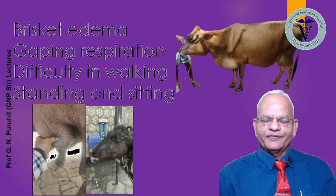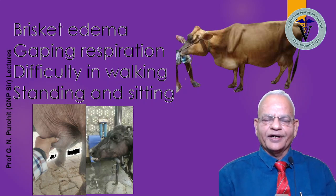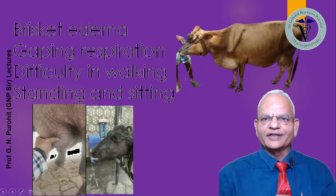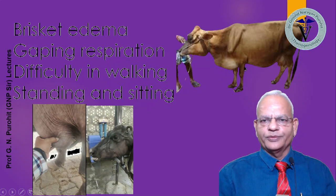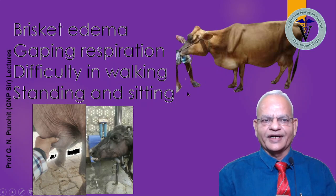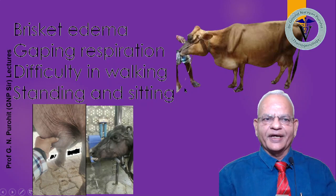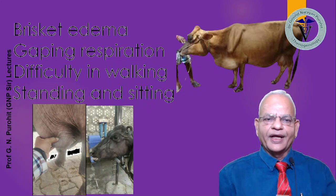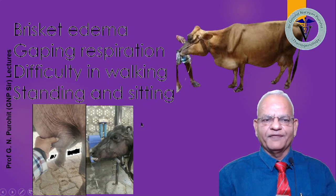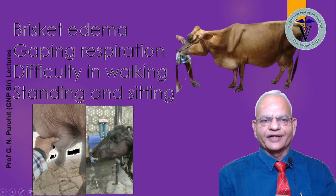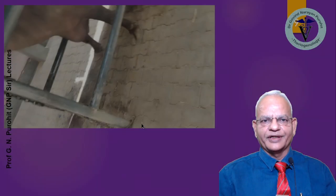When the foreign body enters into the pericardial sac, the animal will have brisket edema — it is very common for the animal to show a huge brisket edema. The animal will also have gaping respiration, difficulty in walking, standing, and sitting. You can see in this picture the buffalo is having great difficulty in respiration, and there is a brisket edema which pits on pressure.